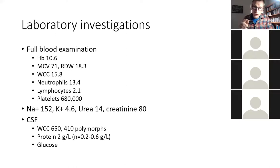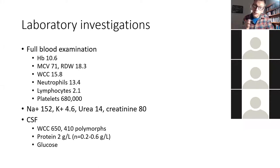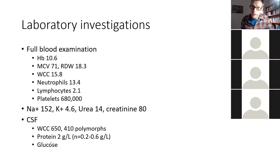The CSF white cell count was obviously high, and most of those white cells were polymorphs. His protein was also high — not as high as you'd sometimes see with TB meningitis, but elevated. Glucose wasn't measurable at the time.